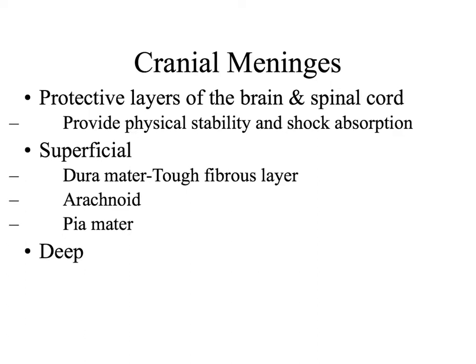We are going to start off with the cranial meninges. The cranial meninges are the layered membranes in the skull. You're going to see bones, membranes, and fluids around the organs of the central nervous system. The meninges have three layers, and these layers help provide the brain and spinal cord with stability and shock absorption.